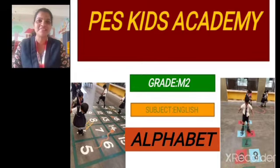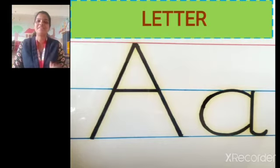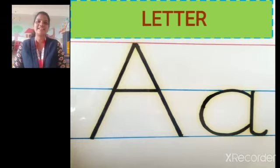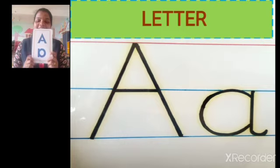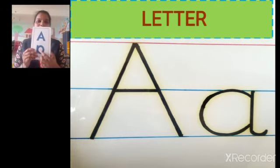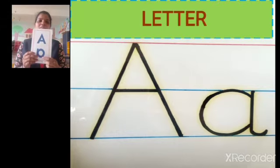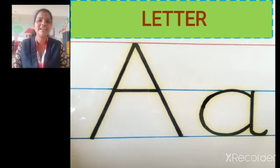In that, first one is letter A. Okay, first letter A, letter A. How to write, how to learn, how to write letter A. Which letter it is? A. This one is capital letter A. This one is small letter A. Okay. A phonic sound is A.